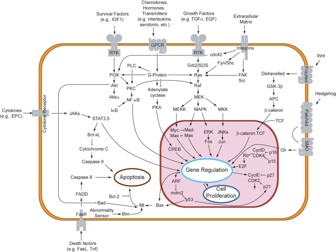Cell signaling has been most extensively studied in the context of human diseases and signaling between cells of a single organism. However, cell signaling may also occur between the cells of two different organisms. In many mammals, early embryo cells exchange signals with cells of the uterus. In the human gastrointestinal tract, bacteria exchange signals with each other and with human epithelial and immune system cells. For the yeast Saccharomyces cerevisiae during mating, some cells send a peptide signal into their environment. The mating factor peptide may bind to a cell surface receptor on other yeast cells and induce them to prepare for mating.